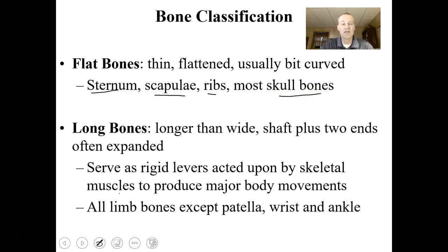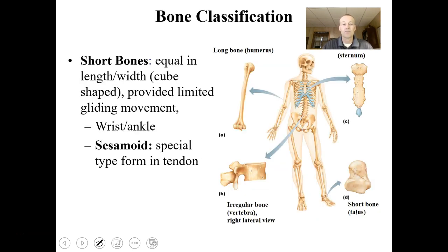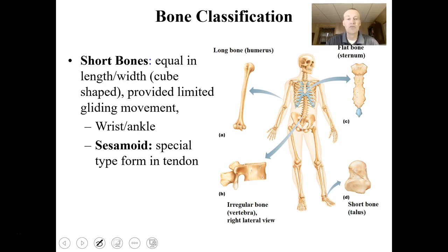Bones can also be classified as long bones. The shaft plus the two expanded ends serve as levers so that your muscles can pull and produce major body movements. All limb bones except for the patella, which is your kneecap, and the bones of the wrist and ankle are considered long bones. Short bones are equal in length and width, or cube-shaped, and they provide limited gliding movement — these would be the bones making up your wrist and ankle.